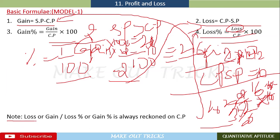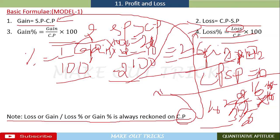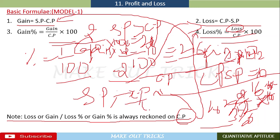Important note: loss percentage or gain percentage is always calculated on cost price, which means cost price must be in the denominator. Sometimes only the selling price is given, so you need to find the cost price first before calculating profit or loss percentage.